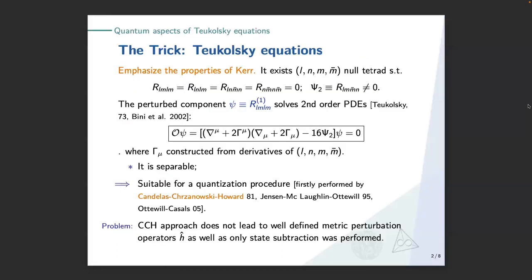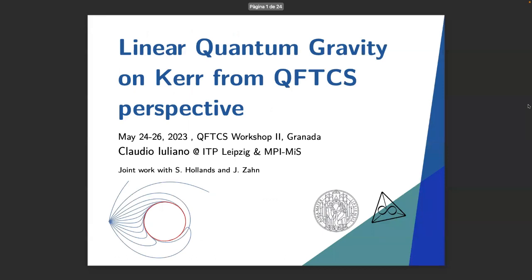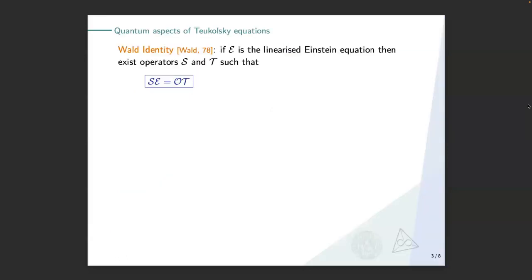So what is the problem? It looks fine so far, but there is a problem in this CCH approach: if you want to try to reconstruct the metric perturbation, the metric perturbation operator — it's unclear how to do it. Also, only state-to-state subtraction was performed in those works. So again, how to compute renormalized expectation values? Sometimes we don't want state subtraction; we really want the renormalized expectation value of some observables.